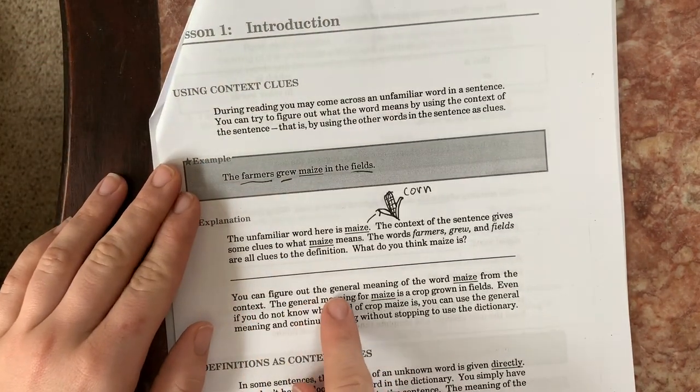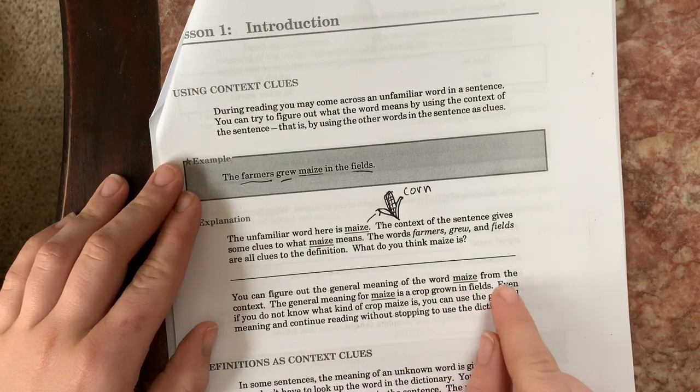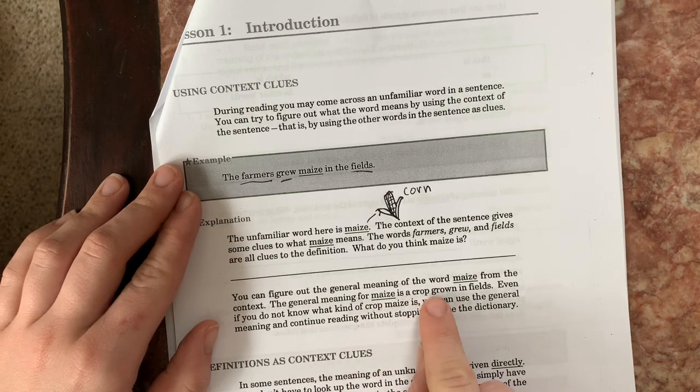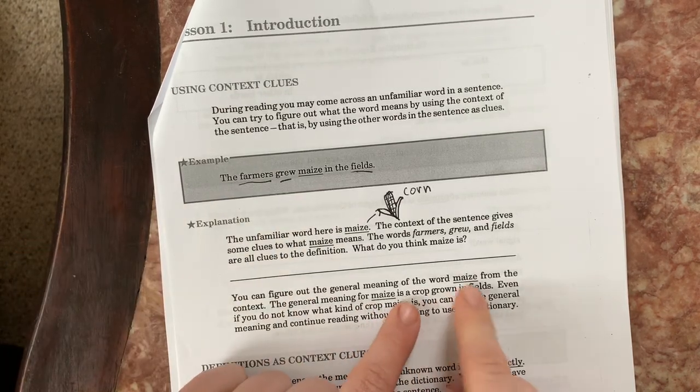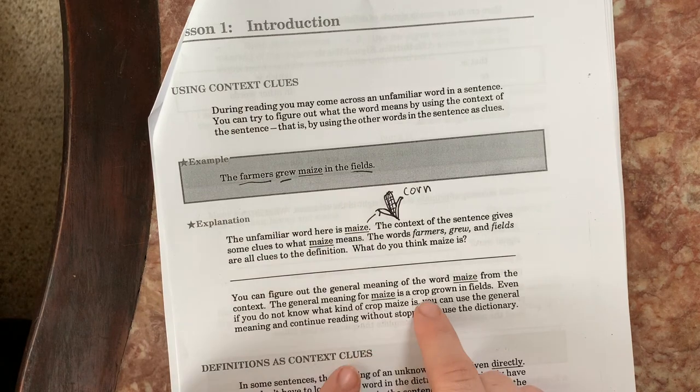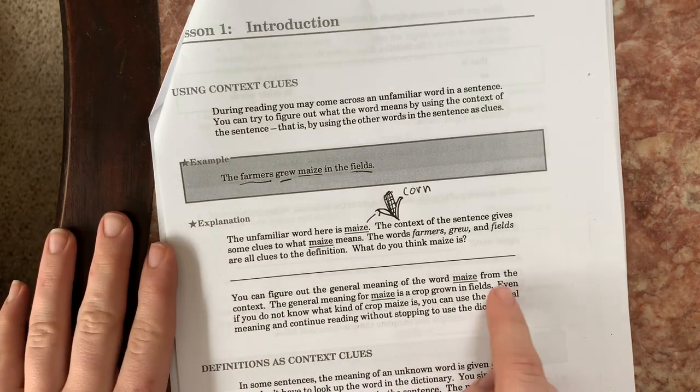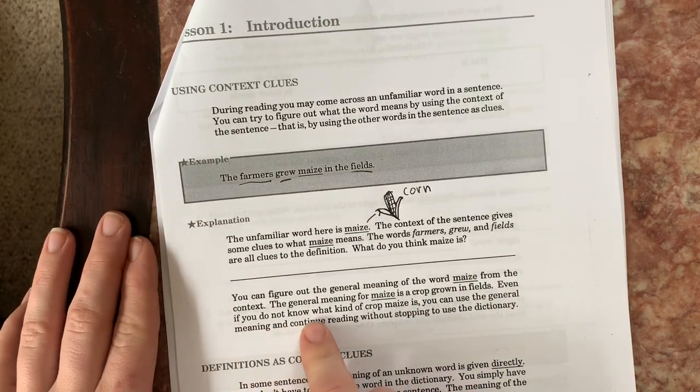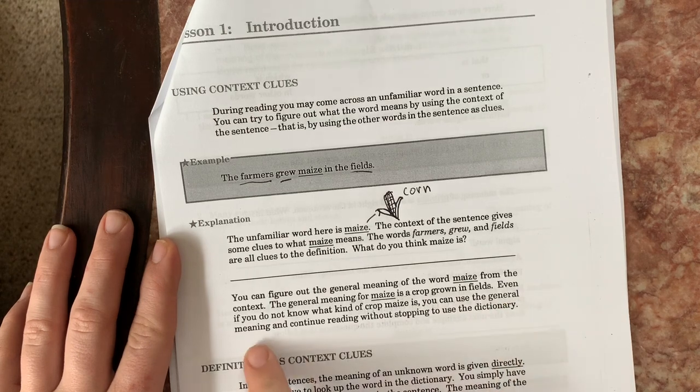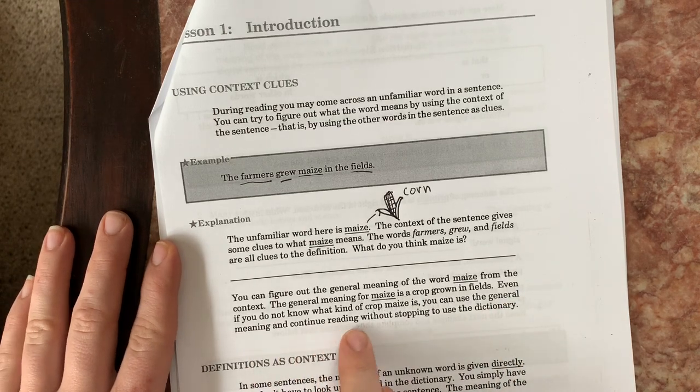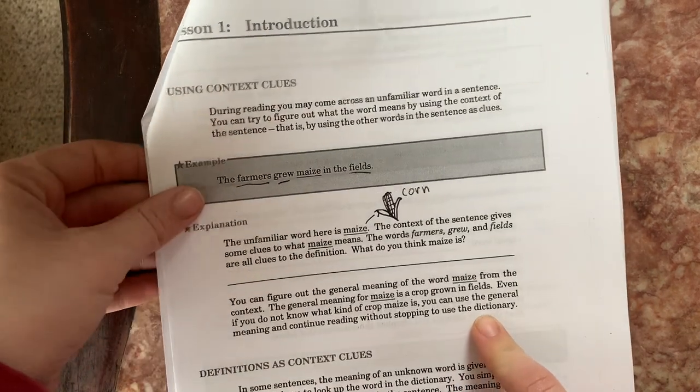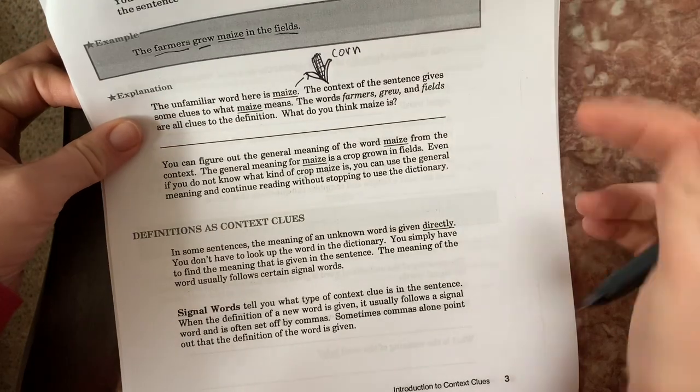You can figure out the general meaning of the word maize from the context. Next, the general meaning for maize is a crop grown in the fields, right? That's our idea. That's what we're getting, the idea about what maize could be. We know it's something that grows in the field, so it's some kind of crop. Even if you do not know what kind of crop maize is, you can use the general meaning and continue reading without stopping to use the dictionary. Which is pretty helpful, right? You don't always have time for a dictionary when we're writing or when we're reading.